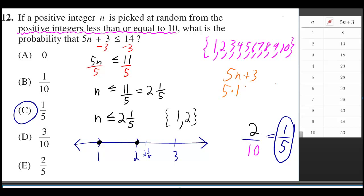For instance, if you plug in 1, then you have 5 times 1 plus 3 instead of 5 times n, which gives you 8.